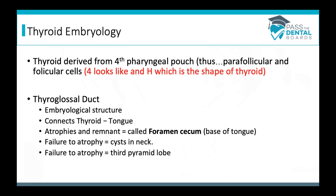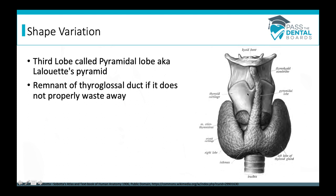If the thyroglossal duct fails to atrophy, it can also result in a third lobe, sometimes called the pyramidal lobe or Laluet's pyramid. So if this duct in the embryo doesn't properly waste away, it can either become cysts in the neck or become the pyramidal lobe.